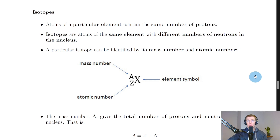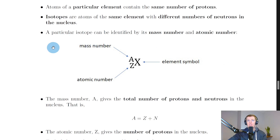The example we're going to look at is carbon-12 versus carbon-14. These are two isotopes of the same element, carbon, but they've got different numbers of neutrons in the nucleus. A particular isotope can be identified by its mass number and atomic number — these are two new terms we can use to describe an isotope.